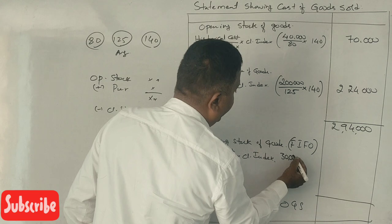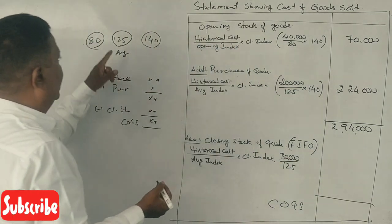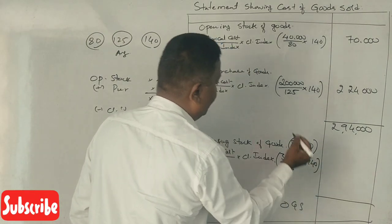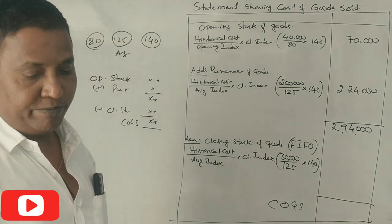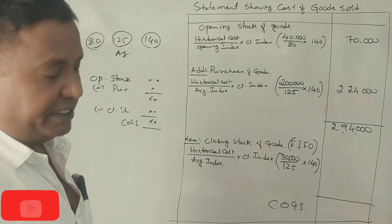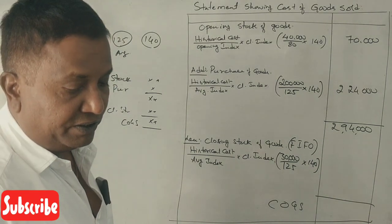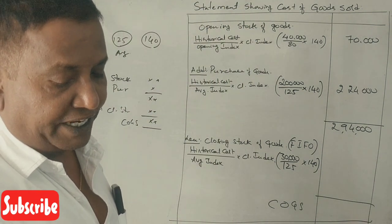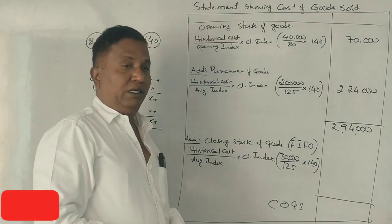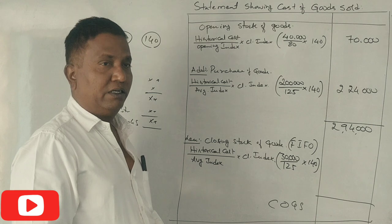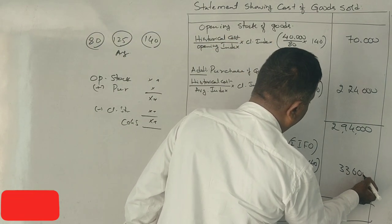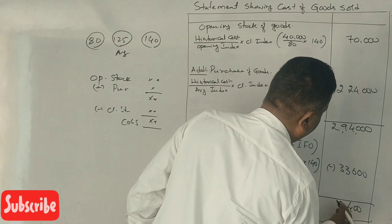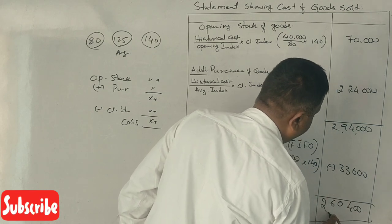Using the average method for closing stock: average into closing index 140. The calculation is $30,000 multiplied by 140 divided by 125, giving $33,600. Alternatively, $35,000 per the FIFO method versus $33,600 under the average method. Therefore, the cost of goods sold is $2,60,400.